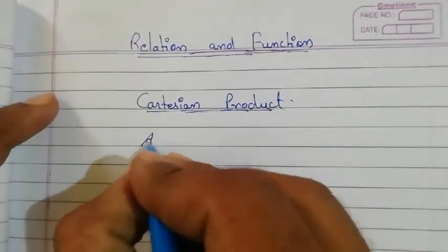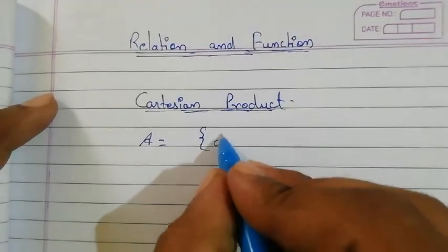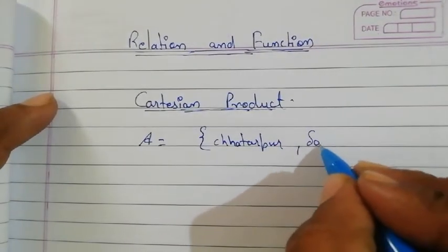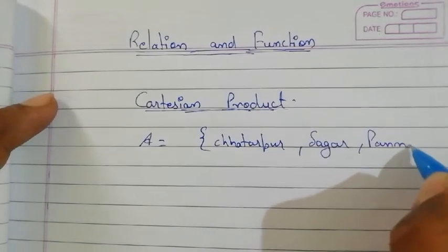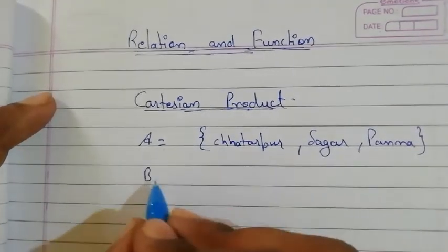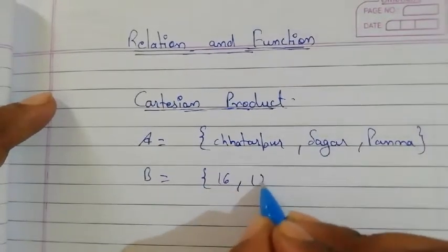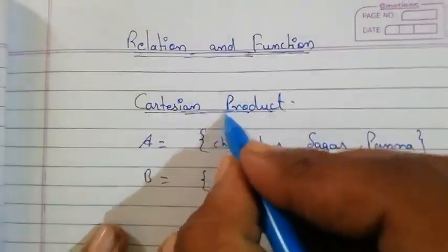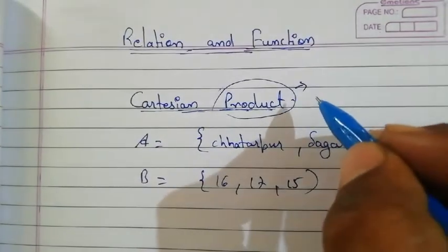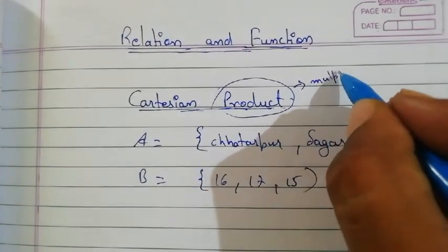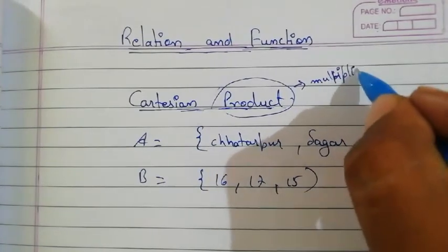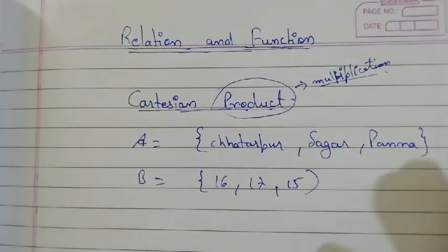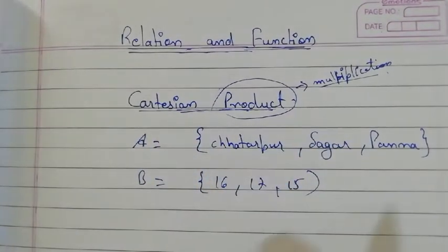Suppose we have two sets. Let A equal to some city names — say Chhatarpur, Sagar, and Panna. And set B has the numbers 16, 17, and 15. If we have to find the Cartesian product — in mathematics, product means multiplication. So using the Cartesian rule, we will multiply all the elements of the sets.